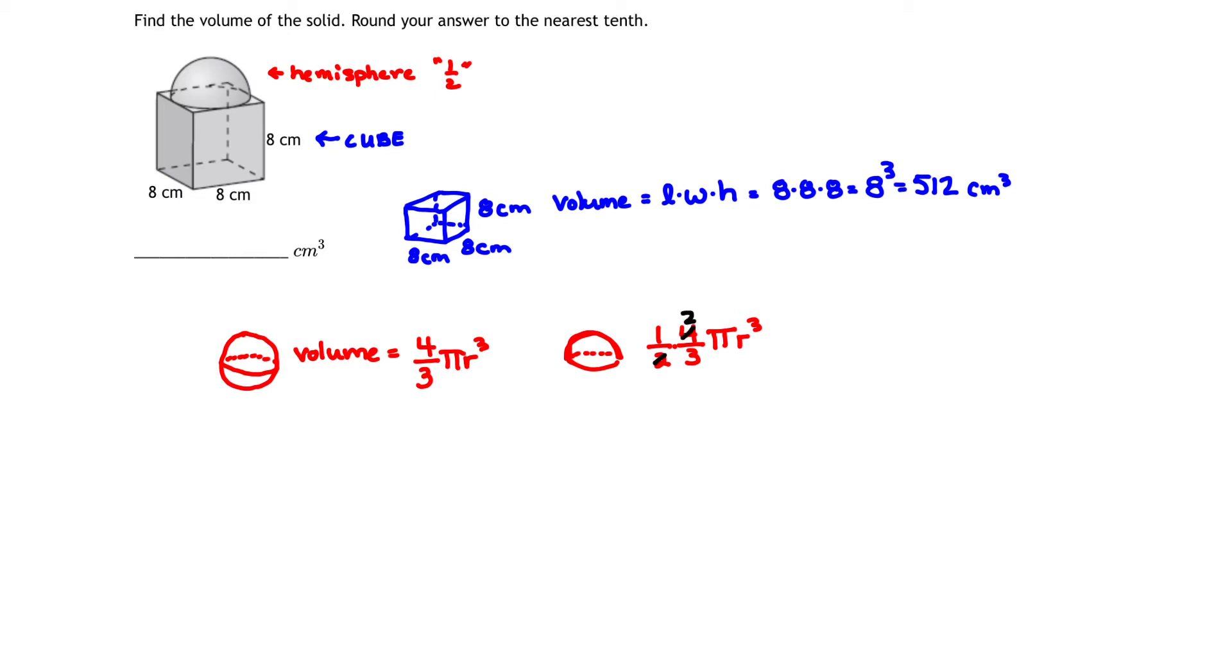What does that tell us then? That tells us that the volume of a hemisphere is simply going to be 2 over 3 times pi times r cubed. We simply have to find our r value for our problem.